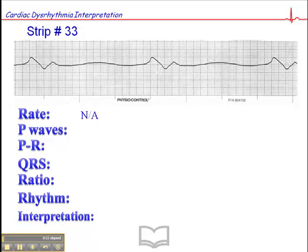Here, the distance between the QRSs is so far apart that the rate is really not applicable. There are no P-waves here, the P-interval is not applicable. The QRS is extremely wide, the ratio is not applicable, the rhythm in this case is regular.